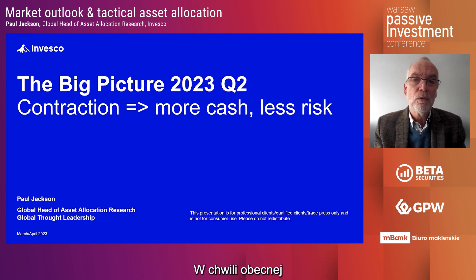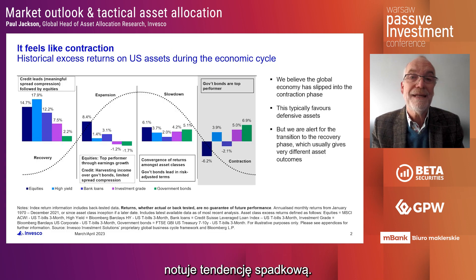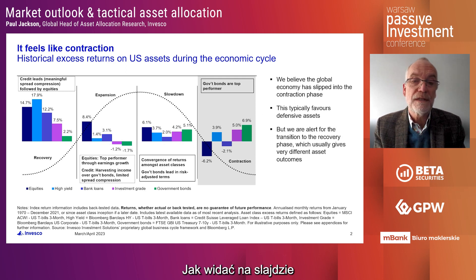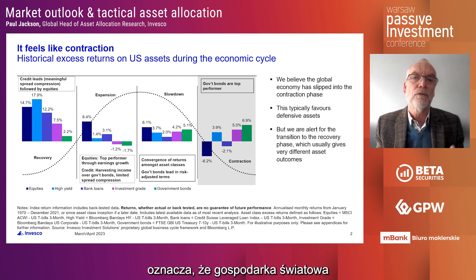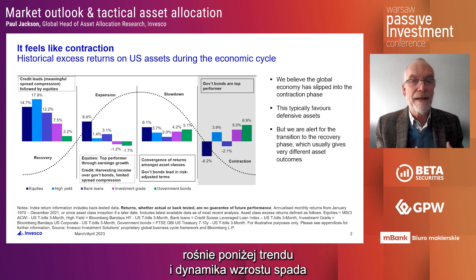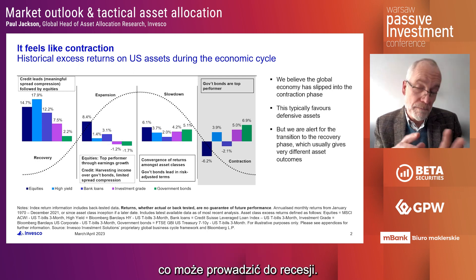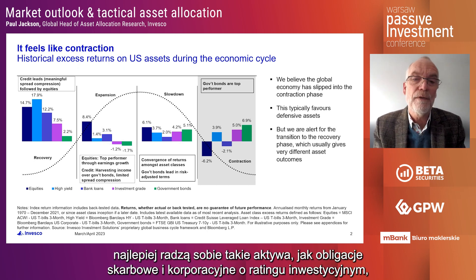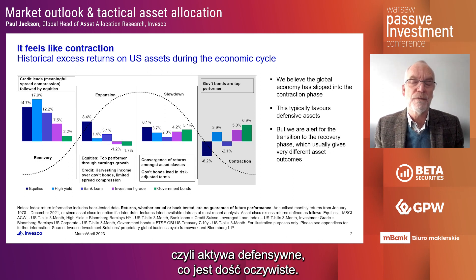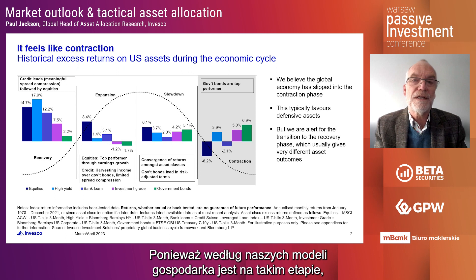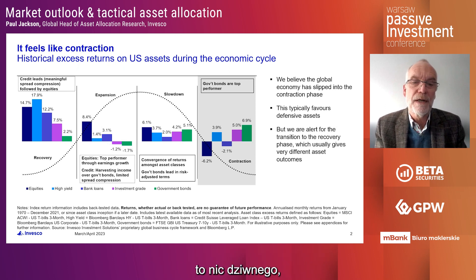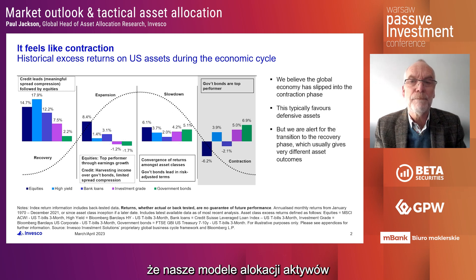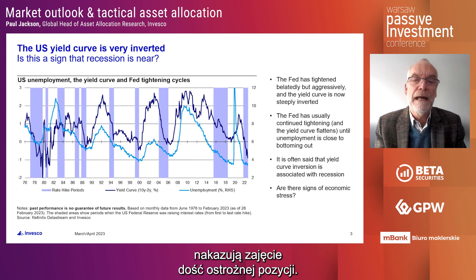At this moment in time we would categorize the global economy as being in a contraction phase. As you can see from this slide, the contraction phase is that phase of the economic cycle when the world is growing slower than trend and when that growth is reducing over time, perhaps ending in recession. When we're in that contraction phase, the assets that tend to perform the best are government bonds and investment grade — those more defensive assets. So given that our models are suggesting we're in this phase, we have a relatively defensive posture within the model asset allocation.